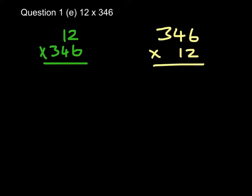Part E asks us to do 12 times 346. Now you could lay it out like this, 12 times 346. Or it's probably slightly easier to lay it out with the bigger number on the top, so 346 times 12. But either one will work.